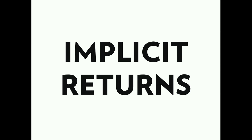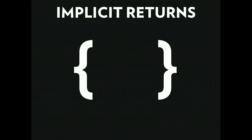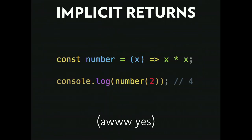Let's check out implicit returns. I have a simple function taking a number and multiplying it by itself. If I do this with curly braces, I get undefined — because I'm not actually returning anything. To fix that, all you do is take those curly bracket scopes and get rid of them. It's the same code, except without the curly braces it's an implicit return. Console log number(2) and I get 4.